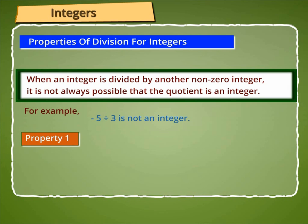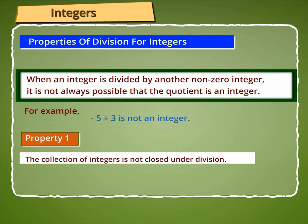Hence, we draw property 1, which states that the collection of integers is not closed under division.